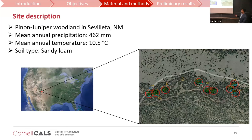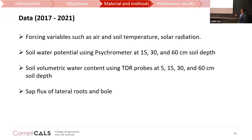My experimental site is in New Mexico, Sevilleta. I will use forcing variables including soil temperature, precipitation, solar radiation, soil water potential, soil water content, and sap flux of lateral roots.